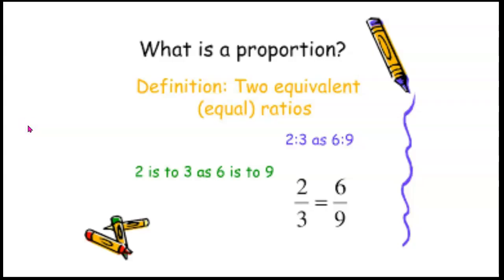What is a proportion? A proportion is two equivalent ratios. We learned about equivalent ratios last week. We know that two-thirds and six-ninths are equivalent ratios. We can show that by understanding that two times three is six and three times three is nine. Therefore, two-thirds and six-ninths form a proportion.